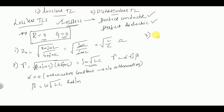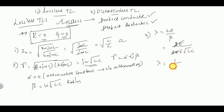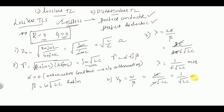We know that wavelength lambda equals 2π/β. Substituting beta = ω√(LC) and using ω = 2πf, the 2π terms cancel, giving lambda equal to 1 / (f√(LC)) meters. The phase velocity Vp is given by ω/β, which is ω / (ω√(LC)), so the ω terms cancel giving Vp equal to 1/√(LC) meters per second.